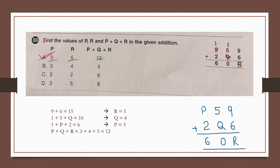Question number 33: Find the values of P, Q and R, and P plus Q plus R in the given addition: P59 plus 2Q6 equals 60R. 9 plus 6 is 15, so R equals 5 and 1 carries over. Then 1 plus 5 plus Q equals 10, so Q equals 4, and 1 carries over. Then 1 plus P plus 2 equals 6, so P equals 3. P plus Q plus R is 3 plus 4 plus 5 equals 12. The correct answer is option A.